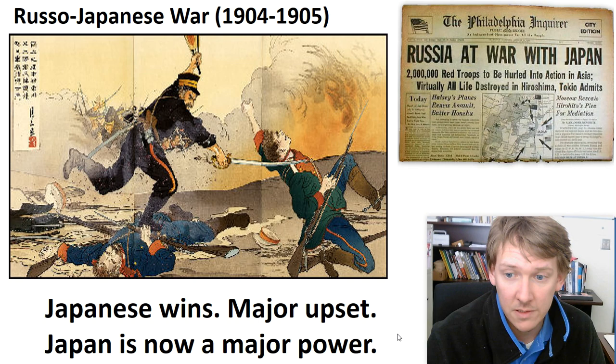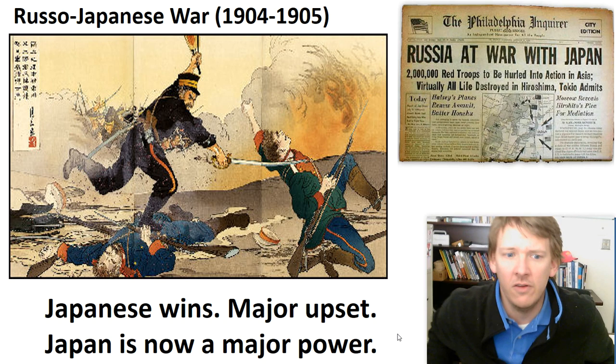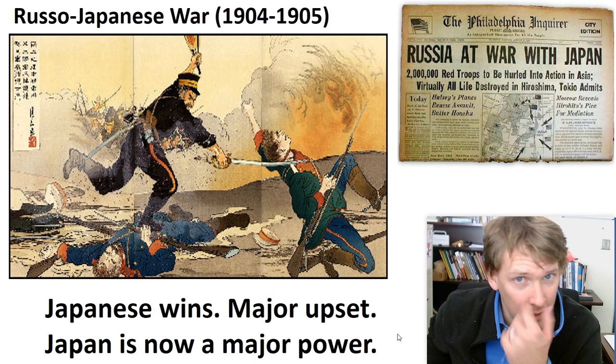We'll start with the Russo-Japanese War — Russia versus Japan, 1904 to 1905. Japan wins, a major upset. Japan got lucky. The weather was on their side, they had a little better technology, they spent more money. They were actually out of money and ready to lose, and they just caught a break.